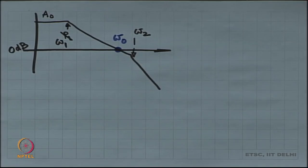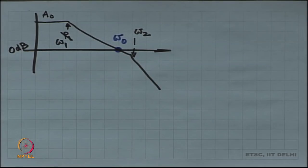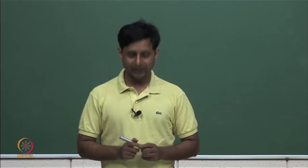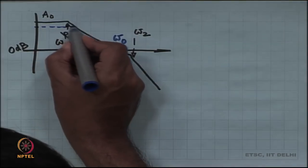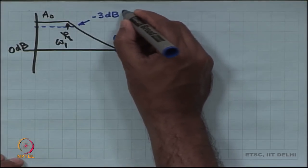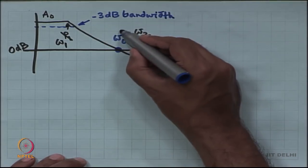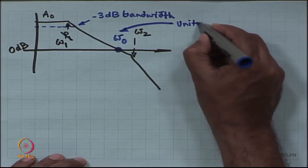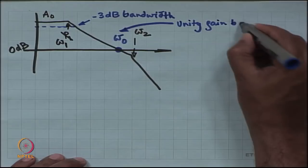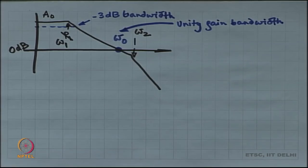This is called the Unity Gain Bandwidth — the frequency at which the amplifier has unity gain, the bandwidth for which the amplifier has gain more than unity. Commonly used bandwidth expressions are minus 3 dB bandwidth and the unity gain bandwidth. There is something very special about the unity gain bandwidth, and we are soon going to see what it is.